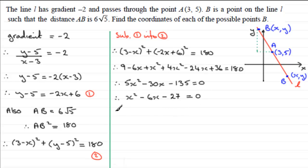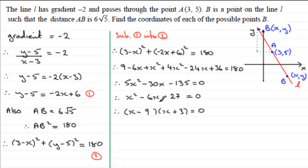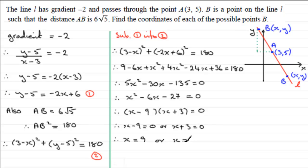Now I should be able to factorise this. We need two numbers that multiply to give minus 27 and combine to give minus 6. That's minus 9 and plus 3, giving (x minus 9)(x plus 3) equals 0. So either x minus 9 equals 0, giving x equals 9, or x plus 3 equals 0, giving x equals minus 3.